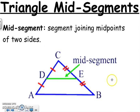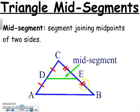We are going to learn about triangle mid-segments. A mid-segment is a segment joining two midpoints of two sides. So I have a midpoint here and a midpoint here. I know that AD is going to be the same as DC, and CE is going to be the same as EB, and that tells me that D and E are midpoints. This right here would be the mid-segment.